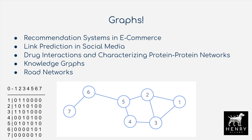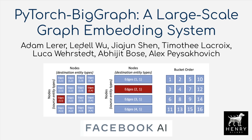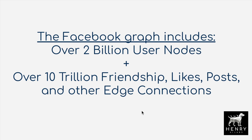We also have knowledge graphs — a really well-known one where we have different kinds of relations between states, people, and all sorts of things — as well as road networks. The Facebook graph of user nodes and interactions like likes on a post or friendships has a scale of 2 billion user nodes and 10 trillion edges, so it's a massive graph for doing these kinds of embeddings.